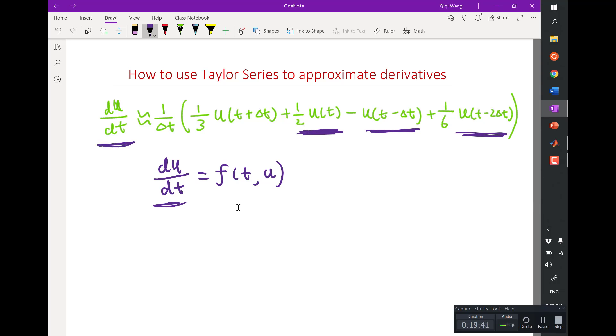So I would also know du dt at the current time t. Remember, all of these approximations are approximations at time t. So the only unknown is this guy. This is the only unknown.